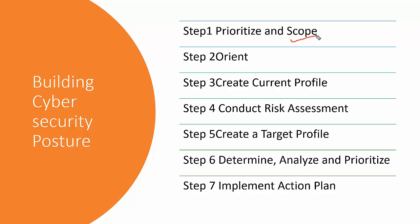This information allows the organization to make strategic decisions about the scope of systems and assets that support the selected business line or process. In Step 1 we identify key executives and speak to them about mission drivers, understand the risk appetite of the organization, define the scope, determine enterprise-wide departments and processes, understand the risk culture, identify roles and responsibilities, and determine the systems required to attain mission goals.